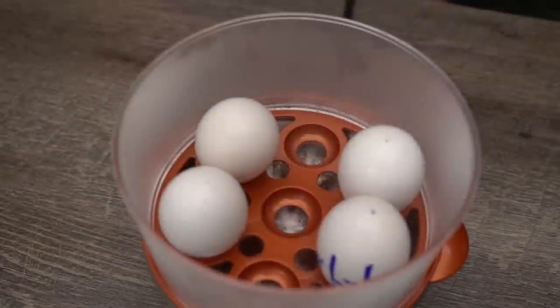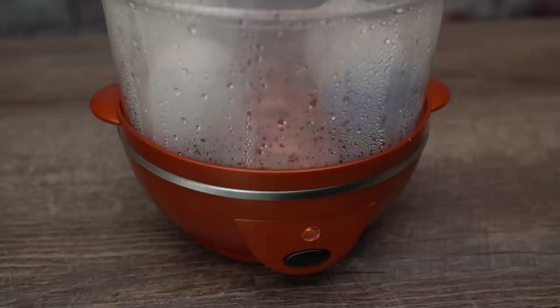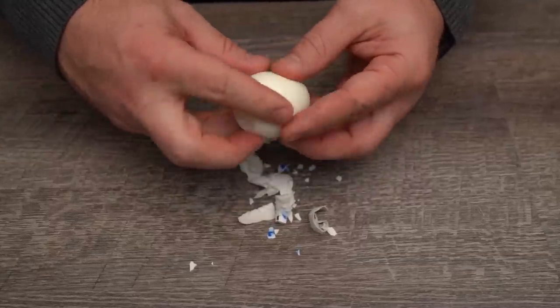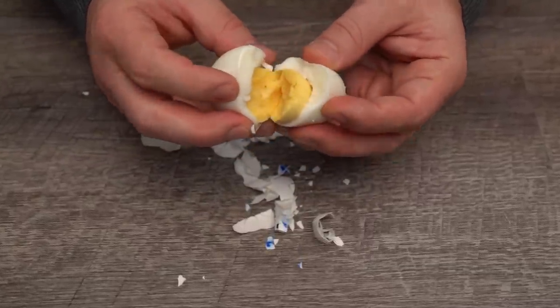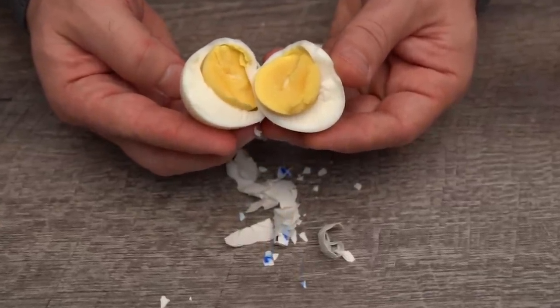After about 15 minutes, your eggs will be done, and the egg maker will shut itself off automatically. Great! As you can see, our results peep for themselves, as the eggs turned out perfectly with ideal consistency.